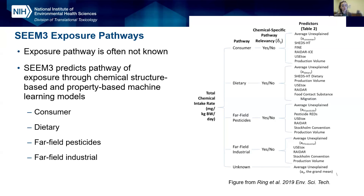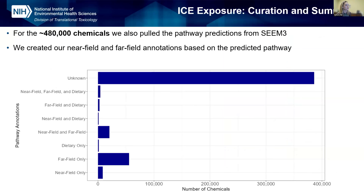One of the really useful things about the SEEM3 model is that it doesn't just predict exposure in milligrams per kilogram per day — it also helps predict exposure pathways, because we typically don't know how all these chemicals are used. SEEM3 predicts pathways of exposure through chemical structure-based and property-based machine learning models. It takes use information from databases like CPDAT and Chemical Data Reporting, builds a training set, and predicts four different pathways: consumer, dietary, far-field pesticide, and far-field industrial. For the approximately 480,000 chemicals with exposure predictions in ICE, we also pulled the pathway predictions from SEEM3 and created our own near-field and far-field annotations. However, a lot of chemicals still have unknown pathways — not because of anything wrong with the model, but simply because we don't often know how chemicals are used.